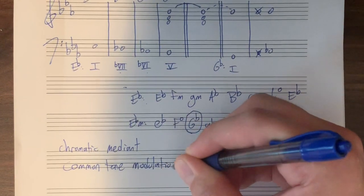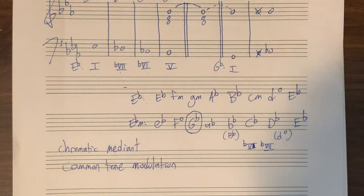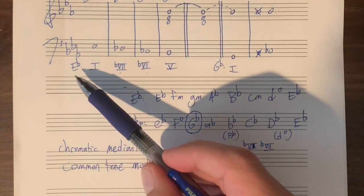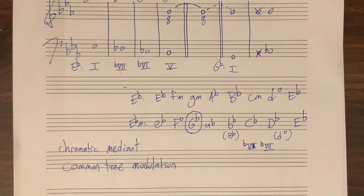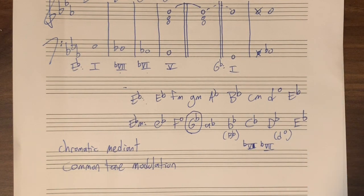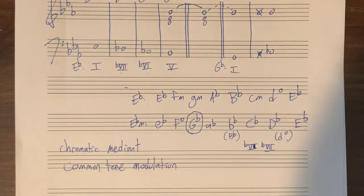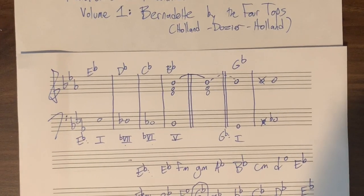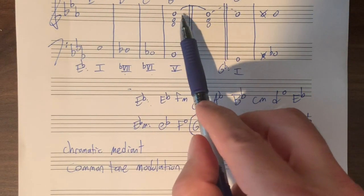Modulation means change of keys, and there are lots of different ways to change keys — some more gradual and smooth, some more sudden and jarring. This common tone one is kind of in between. It would be a very jarring move to suddenly go from E flat to G flat, but what Holland-Dozier-Holland did was hold onto that B flat.